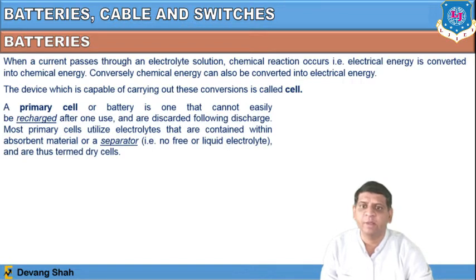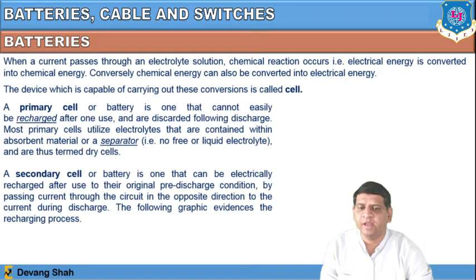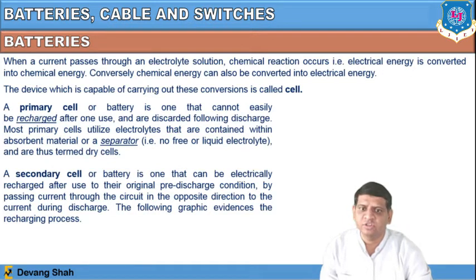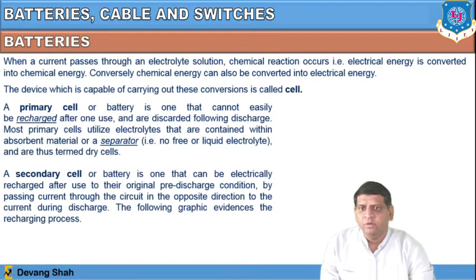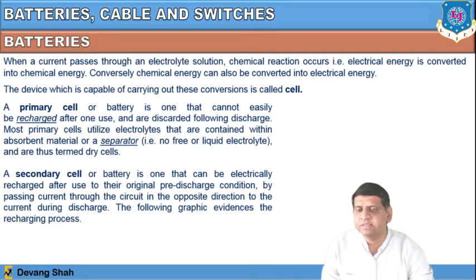A secondary cell or battery is one that can be electrically recharged after use to its original pre-discharge condition by passing current through the circuit in the opposite direction to the discharge current. This recharging process is shown in the following graphical evidence. A battery is one of the important elements of any electrical circuit, existing either as a single cell or as a collection of cells — a battery. Part 1 is the primary cell.